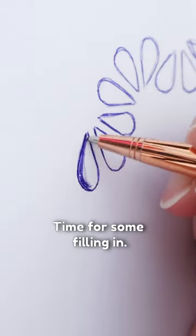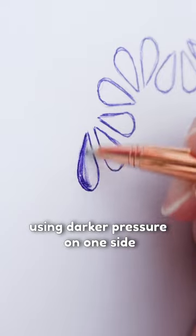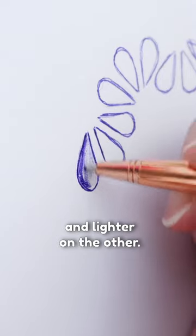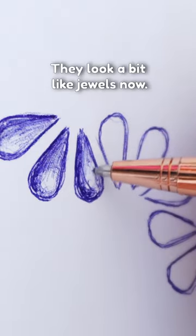Time for some filling in. Shade in a blob using darker pressure on one side and lighter on the other. They look a bit like jewels now. Shiny!